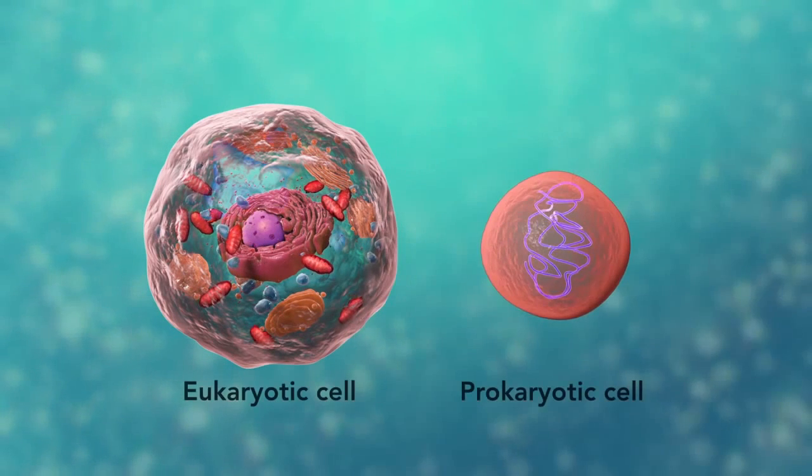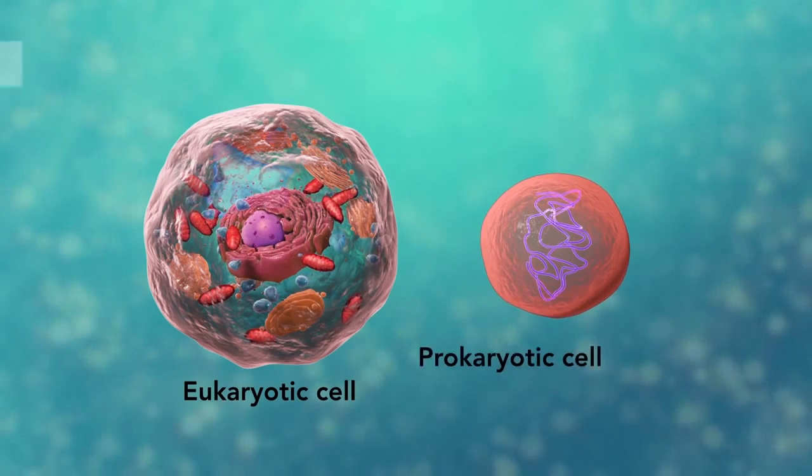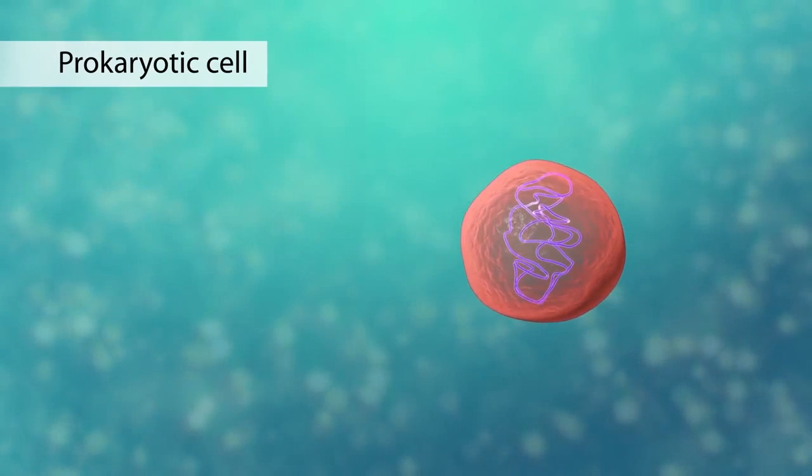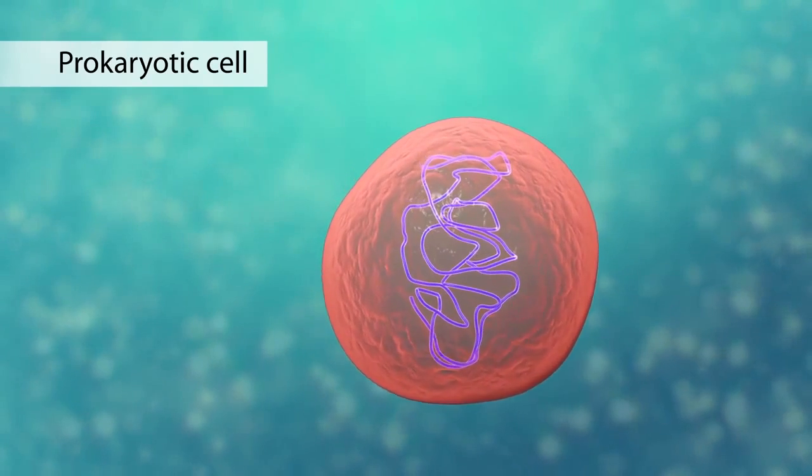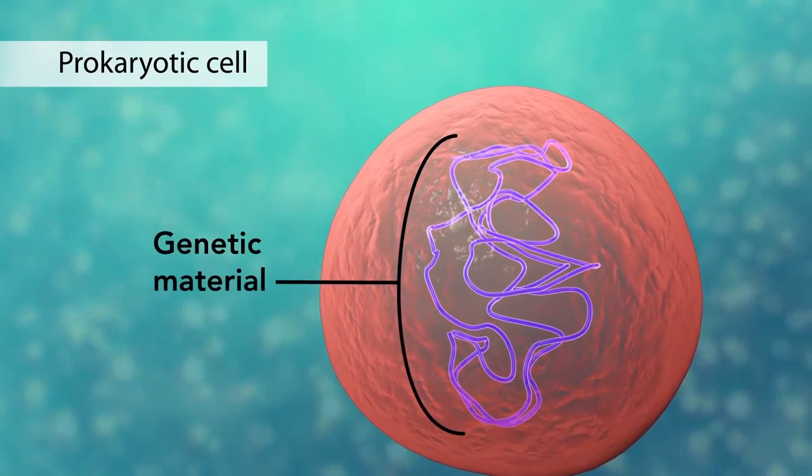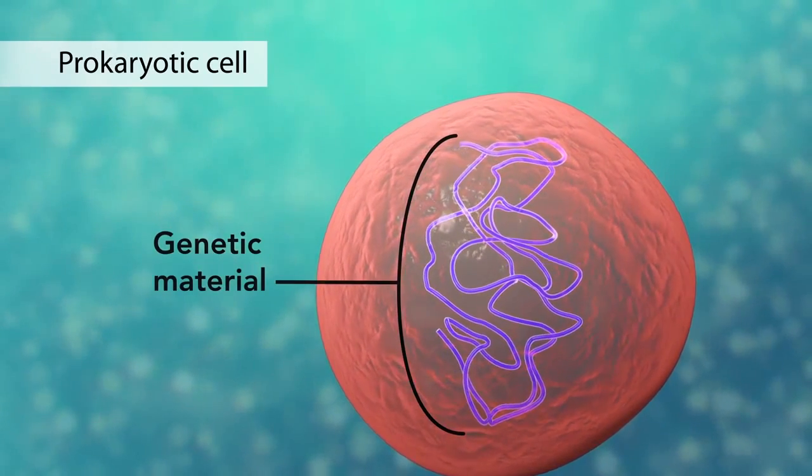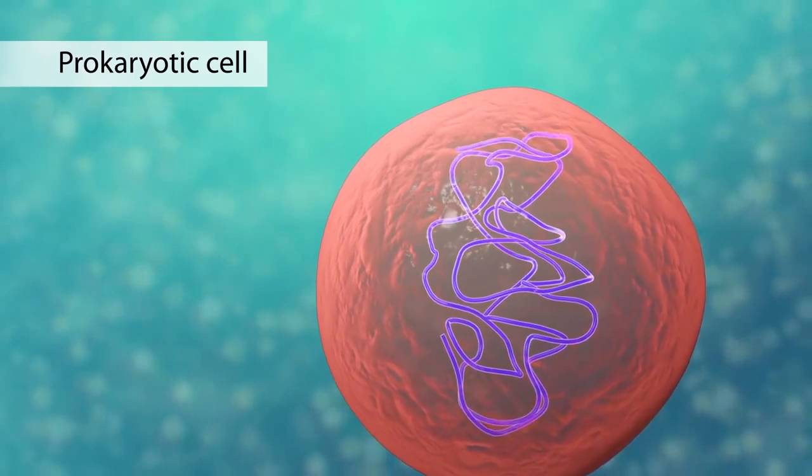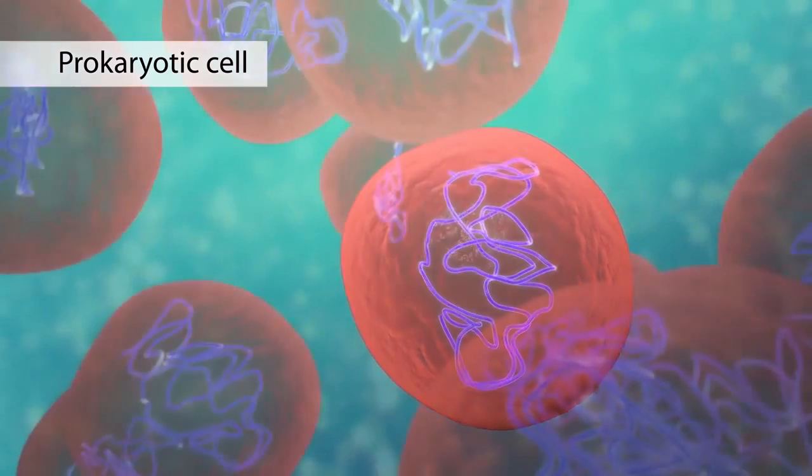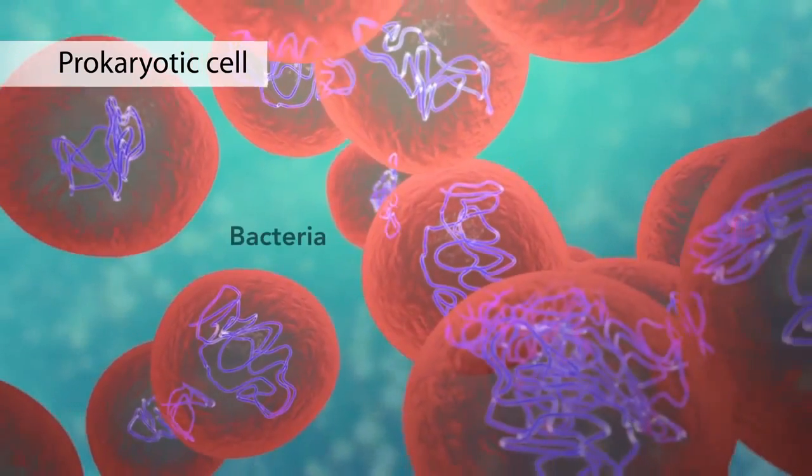The second category is prokaryotic cells. They don't have a nucleus or membrane-enclosed organelles. They do have genetic material, but it's not contained within a nucleus. Prokaryotic cells are always one-celled or unicellular organisms such as bacteria.